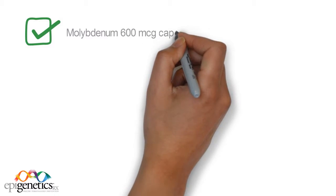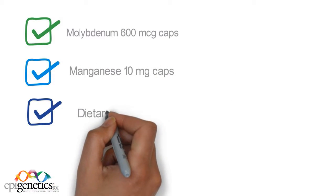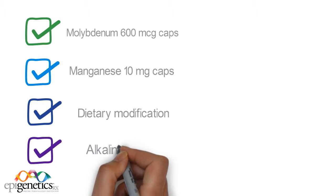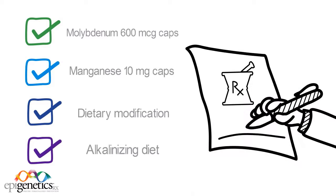The doctor prescribed molybdenum and manganese 10 milligrams, which helps the body process sulfites into sulfates, which then help clear cholesterol, bile acids, excitatory neurotransmitters, and help rejuvenate the gut.